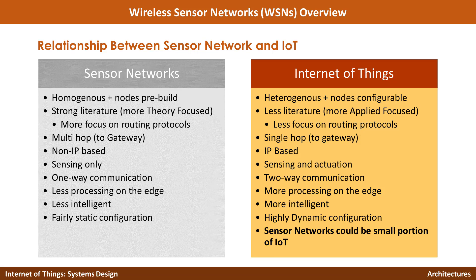Based on the description so far, you might have already felt that wireless sensor networks are somewhat similar to Internet of Things. In some ways that is correct, but it is really important to understand the differences and the relationship between sensor networks and Internet of Things. So let's compare sensor networks to Internet of Things.